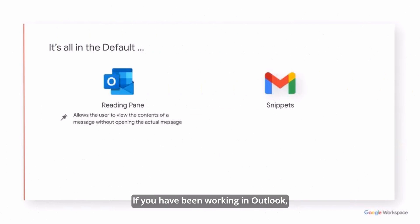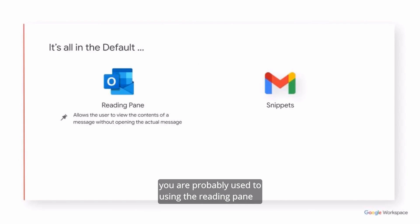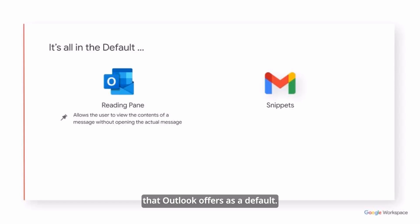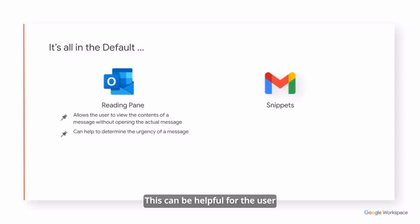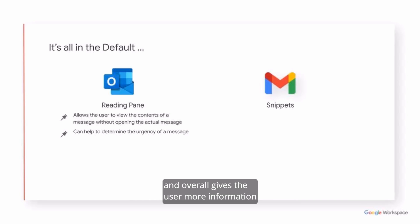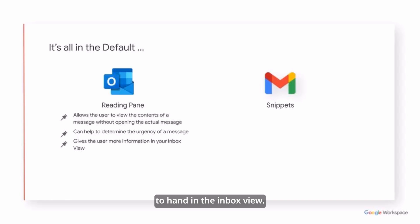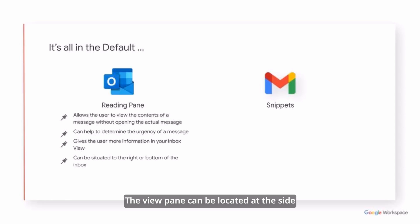If you have been working in Outlook you are probably used to using the Reading pane that Outlook offers as a default. The Reading pane allows the user to view the contents of a message without opening the actual message. This can be helpful for the user to determine the urgency of a message and overall gives the user more information to hand in the Inbox view. The Reading pane can be located at the side or the bottom of the Inbox.